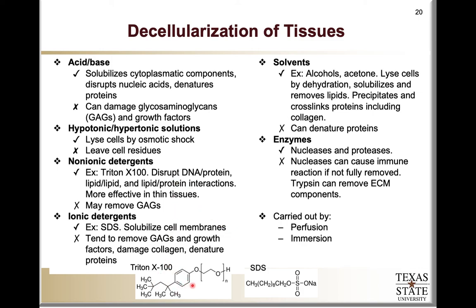Here at the bottom is the structure of one of the non-ionic detergents, Triton X100, which is used significantly in this field to disrupt DNA-protein interactions, lipid-lipid interactions, and lipid-protein interactions. However, it may also have the ability to remove the glycosaminoglycans, which is not desirable — we actually want to leave those in place ideally. On the right-hand side is the structure of SDS, which is an ionic surfactant utilized to solubilize cell membranes, but it also tends to remove glycosaminoglycans and can damage other biomolecules that are necessary to stimulate cell adhesion and cell growth.